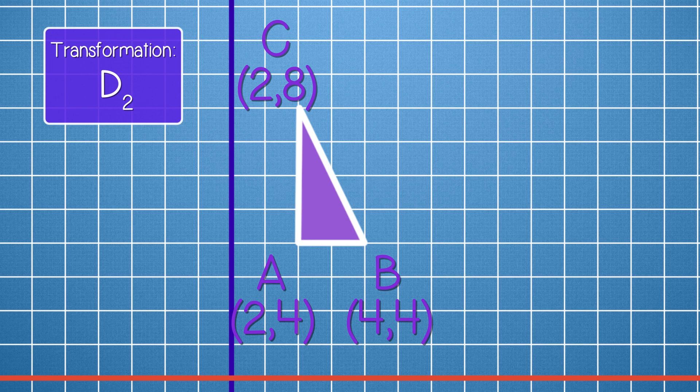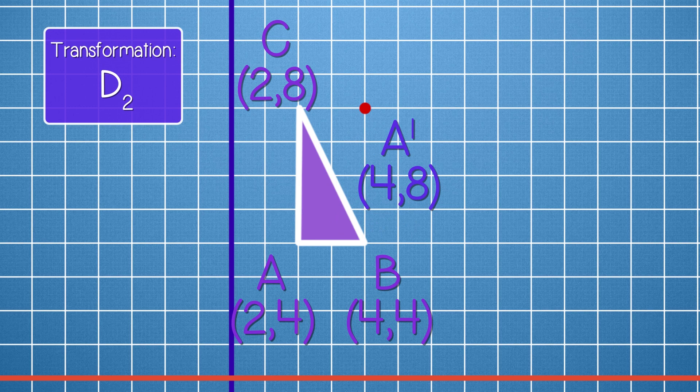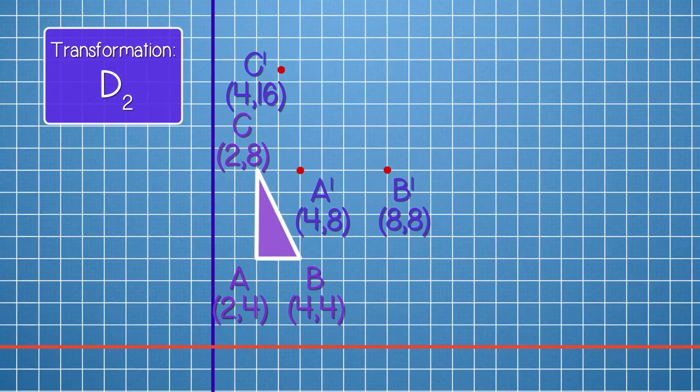We take each point and multiply by 2. So our first vertex, A, at 2, 4, becomes 4, 8. And our second vertex, B, at 4, 4, becomes 8, 8. And our third vertex, C, 2, 8, becomes 4, 16.